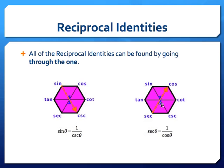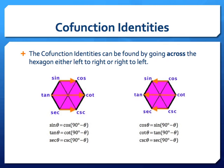The cofunction identities can be found by going across the hexagon, either left to right or right to left. Going across at the top, sine is going to be equal to cosine of 90 minus theta, and all three pairs work that way. Going the other direction, cosine of theta would be equal to sine of 90 minus theta. So each cofunction identity can be found by going across the hexagon either left to right or right to left.